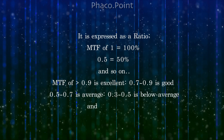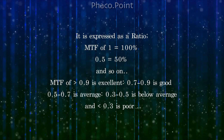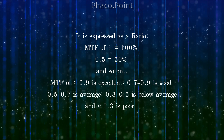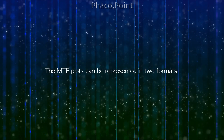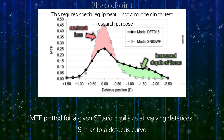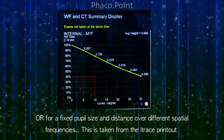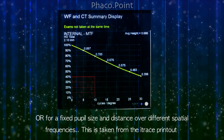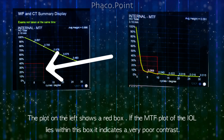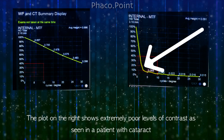The MTF is expressed as a ratio: an MTF of 1 equals 100% transference of contrast, 0.5 is 50%, and so on. An MTF of 0.9 is excellent, 0.7 to 0.9 is good, 0.5 to 0.7 is average, 0.3 to 0.5 is below average, and less than 0.3 is extremely poor. MTF plots can be represented in two formats: for a given spatial frequency and pupil size at varying distances, similar to a defocus curve, or for a fixed pupil size and distance over different spatial frequencies. If the MTF plot of the IOL lies within the red cutoff box, it indicates very poor contrast function. The plot on the right shows extremely poor levels of contrast as seen in a patient with significant cataract.